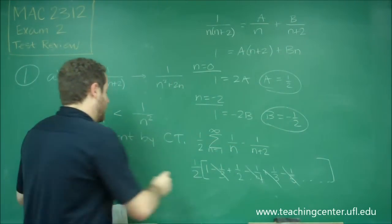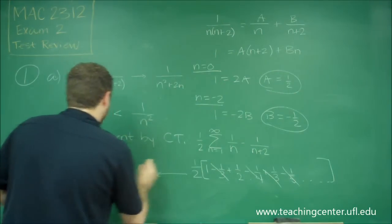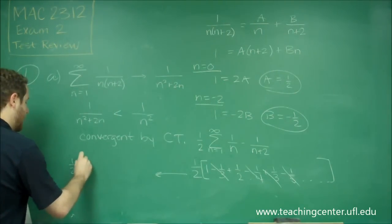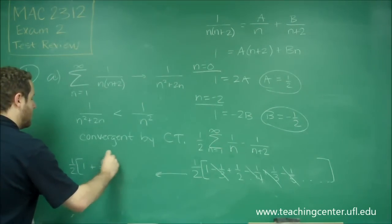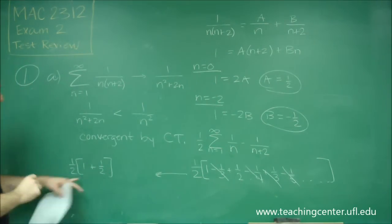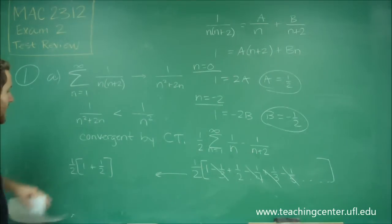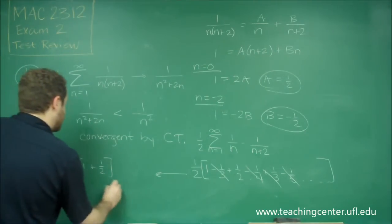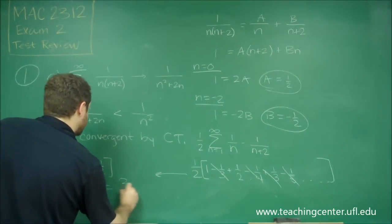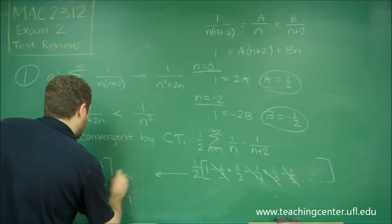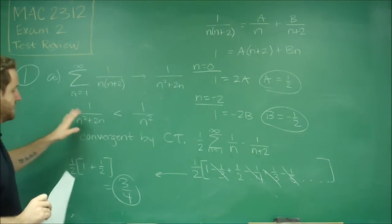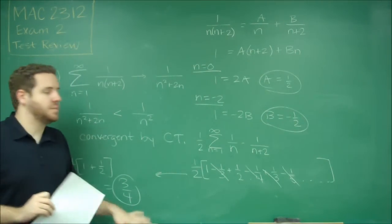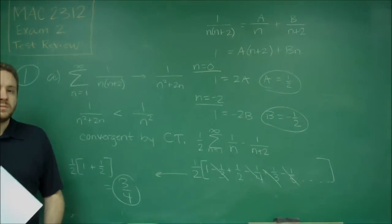So what we're going to get here is 1 half times 1 plus 1 half. Well, 1 plus 1 half is 3 halves, and half of 3 halves is 3 fourths. So the sum of this series is going to be 3 fourths.